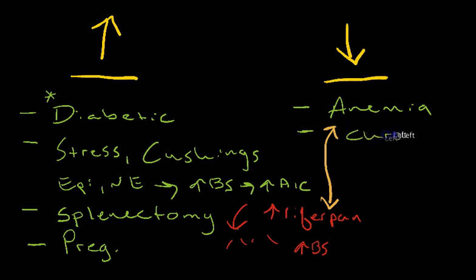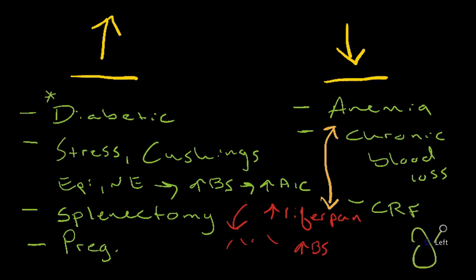Another example would be chronic blood loss, just because the red blood cell survival rate is shortened. And the last example that I want to put on here is chronic renal failure. And the reason for that is because these patients have reduced hemoglobin levels as a result of a lack of erythropoietin. If you have renal failure, as you probably know, your kidneys secrete something called erythropoietin. And so if that is affected, the A1c ultimately would be affected too.